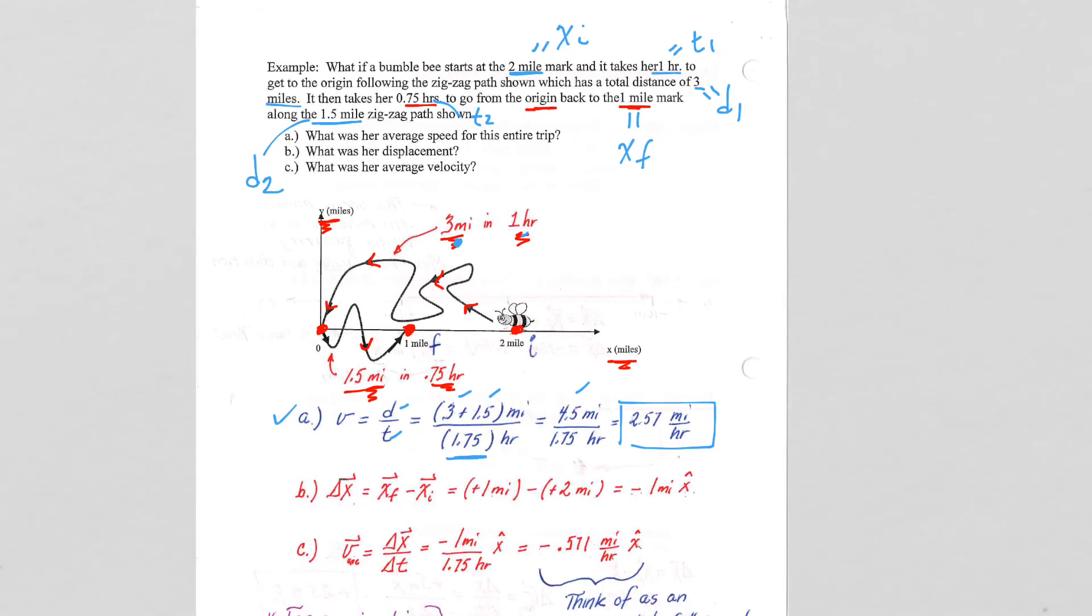x final minus x initial, same deal. So x final was position positive 1 on the x-axis minus x initial, which is x initial was plus 2 meters on the x-axis. So the displacement, which is the net movement based on position only, end points only matter, said that it was one unit, in this case one mile, the negative is to the left, and that x with the little almost triangle little point on top is called an x-hat, but for us that's just direction. So one mile in the negative x direction.